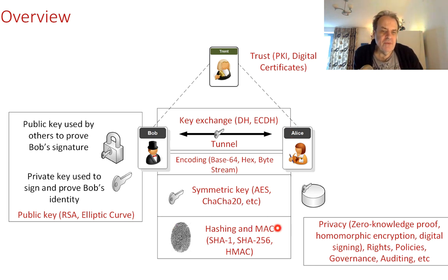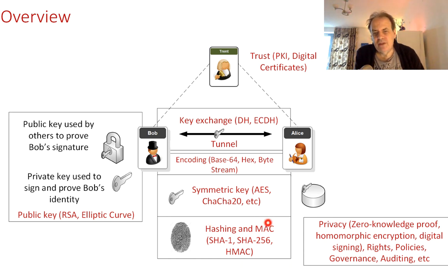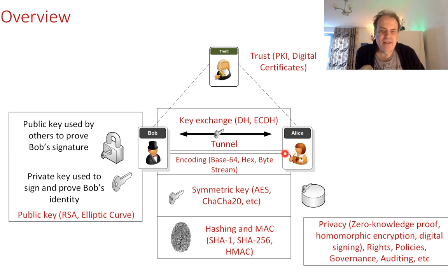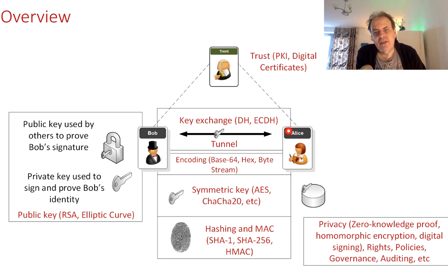We need to make sure messages are correct and that we're still communicating with the entities we think we are. For that we need a fingerprint using hashing or message authentication codes (MACs), such as SHA1, SHA256, and HMAC. We also need trust on the internet — how do we trust Bob's identity? We use the concept of trust with Trent, who proves Bob's identity using the public key infrastructure (PKI) and digital certificates, allowing Bob and Alice to trust each other.